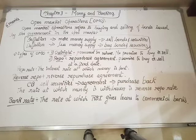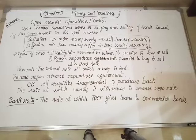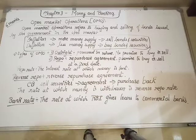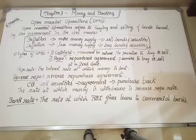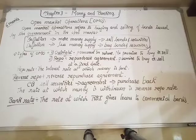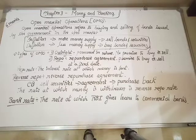Now, what is repo? The full form of repo is repurchase agreement. Repo is the dead opposite of outright. Under a repurchase agreement, the government promises to buy or sell the securities or bonds at a fixed date. For example, today the government sells a bond to a commercial bank, and after two months or two years it will buy it back on an agreed date. That is called repo or repurchase agreement.